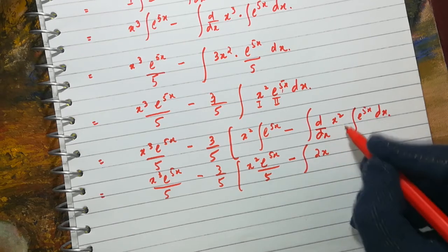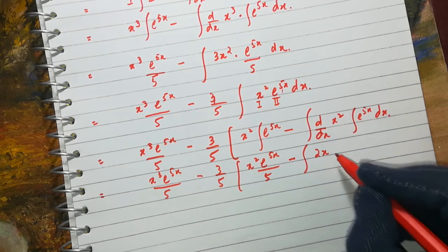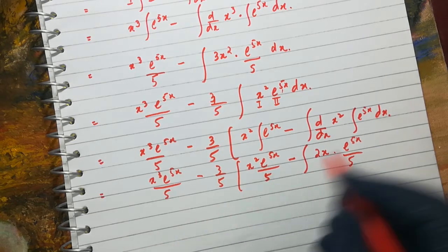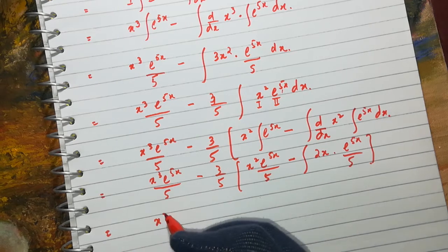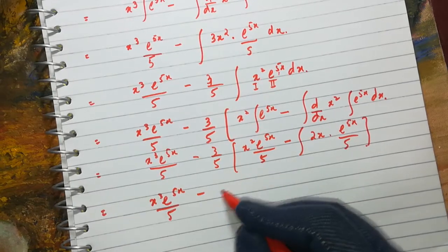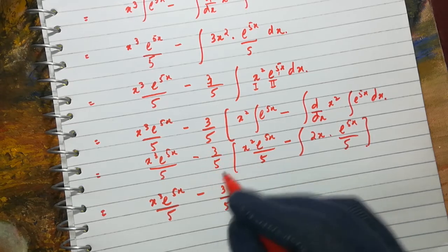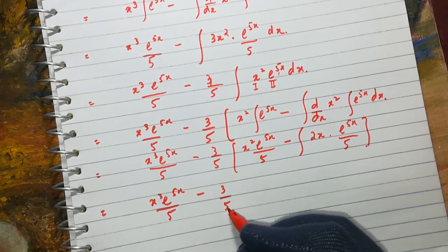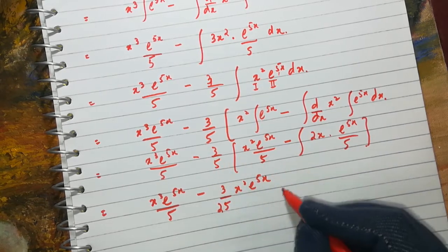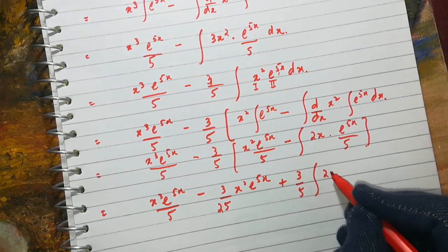The derivative of x² by the power rule gives 2x (power 2 minus 1 = 1). The integral of e^(5x) is e^(5x)/5. Expanding and multiplying (3/5) through: we get x³ · e^(5x)/5 minus (3/25) · x² · e^(5x), and then plus (3/5) times the integral of 2x · e^(5x)/5, dx.